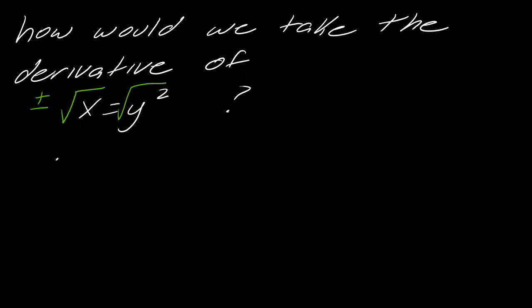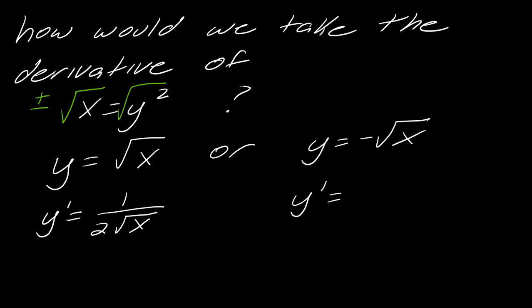So what this would equal is I would get y equals the square root of x or y equals the negative square root of x, and then from here I could take my derivative. I would just have to take it twice, right? This version of the derivative would be 1 over 2 times the square root of x, and then this one would be negative 1 over 2 times the square root of x.